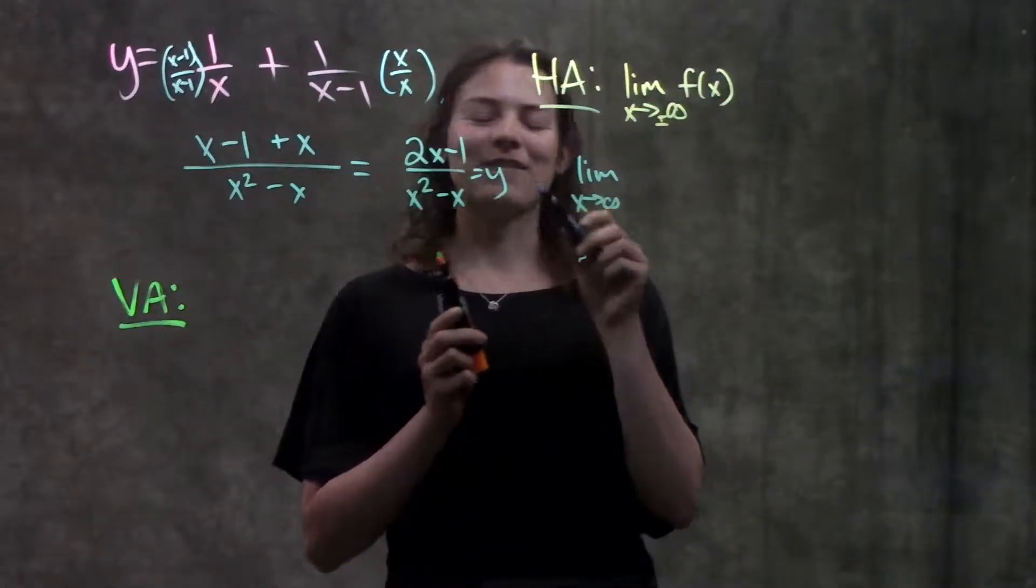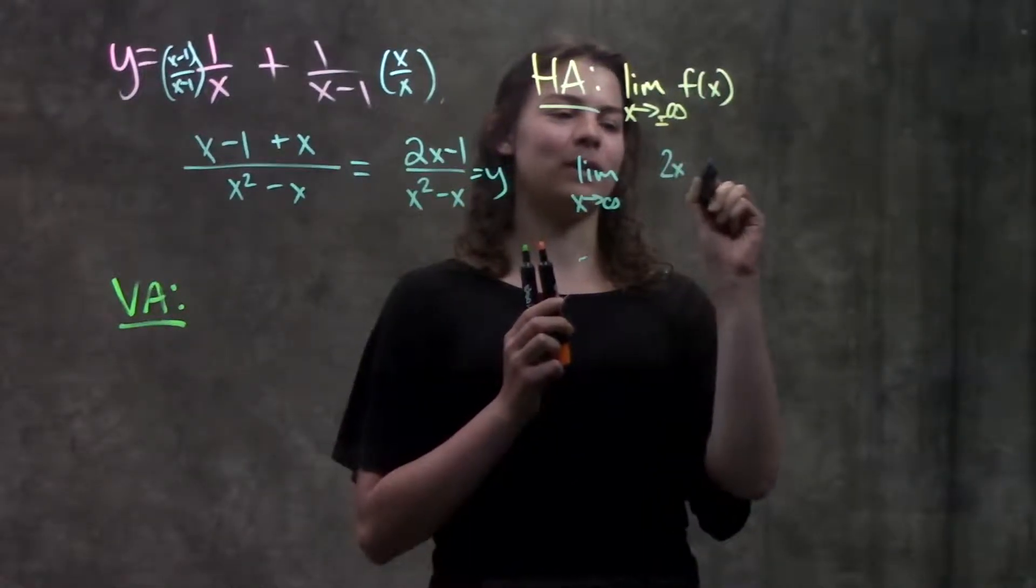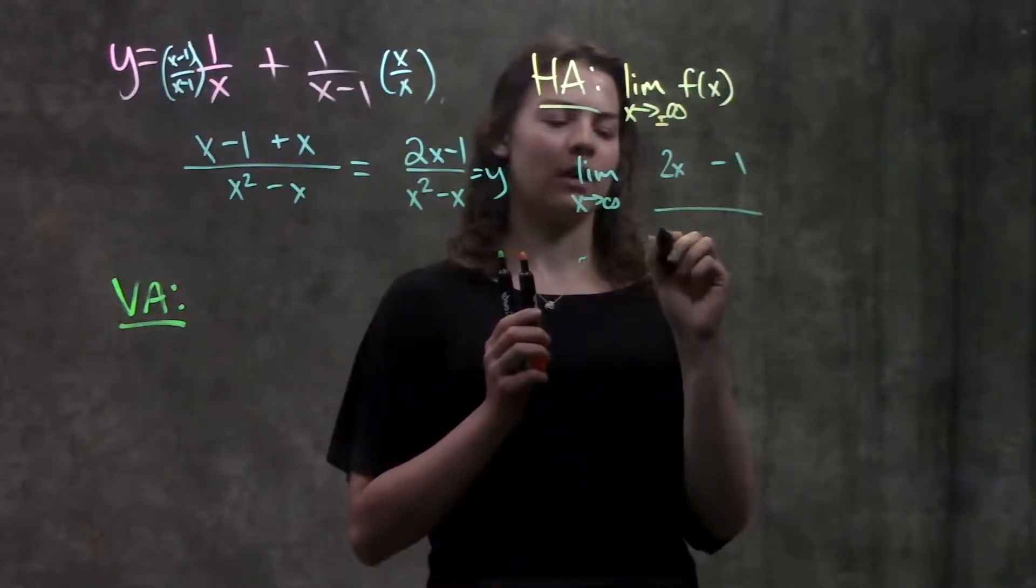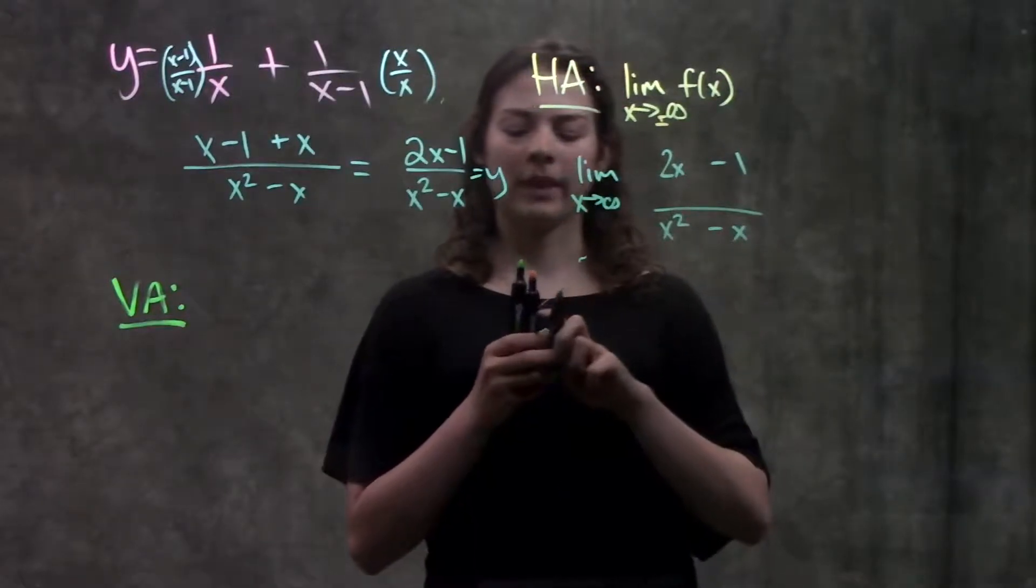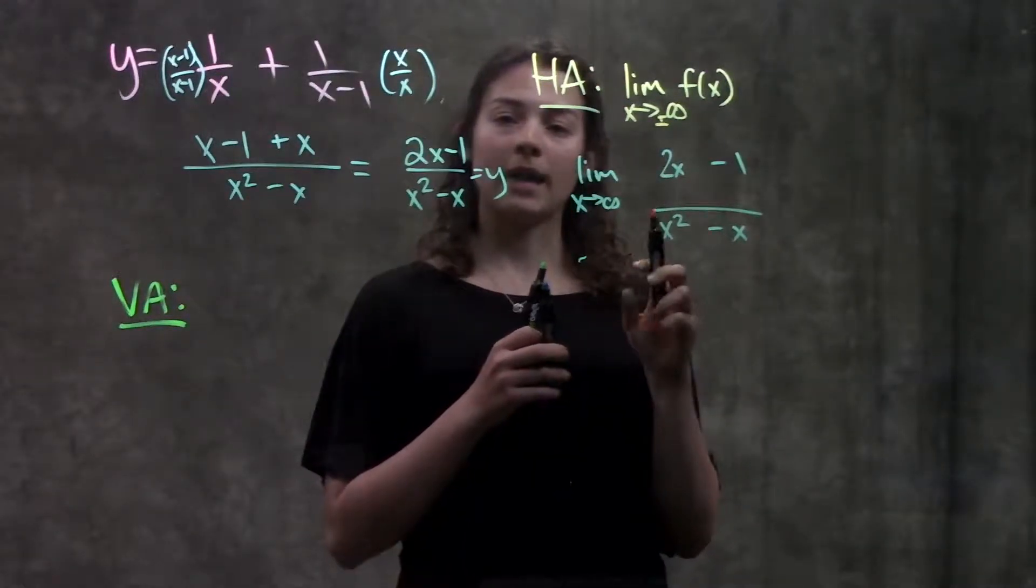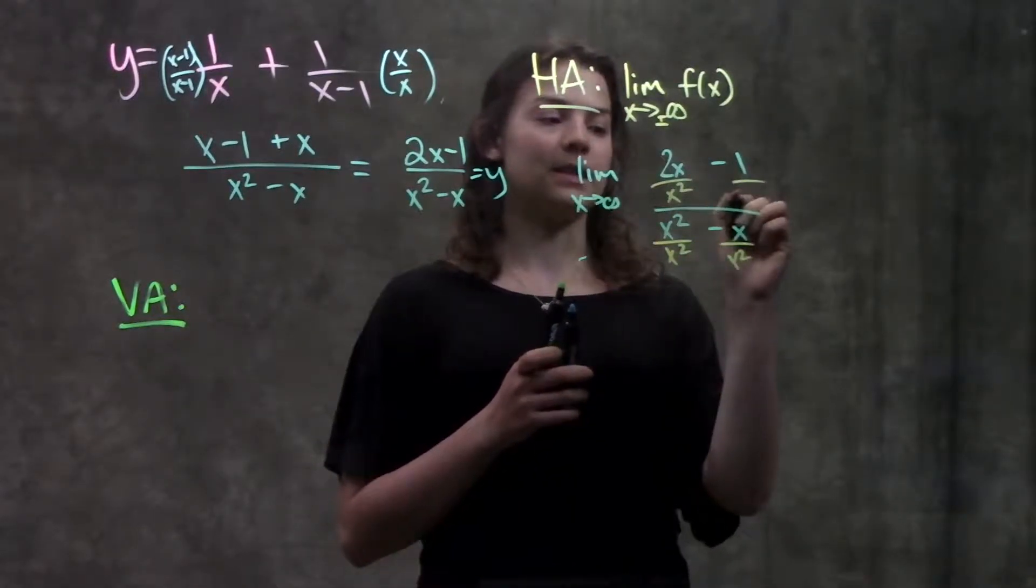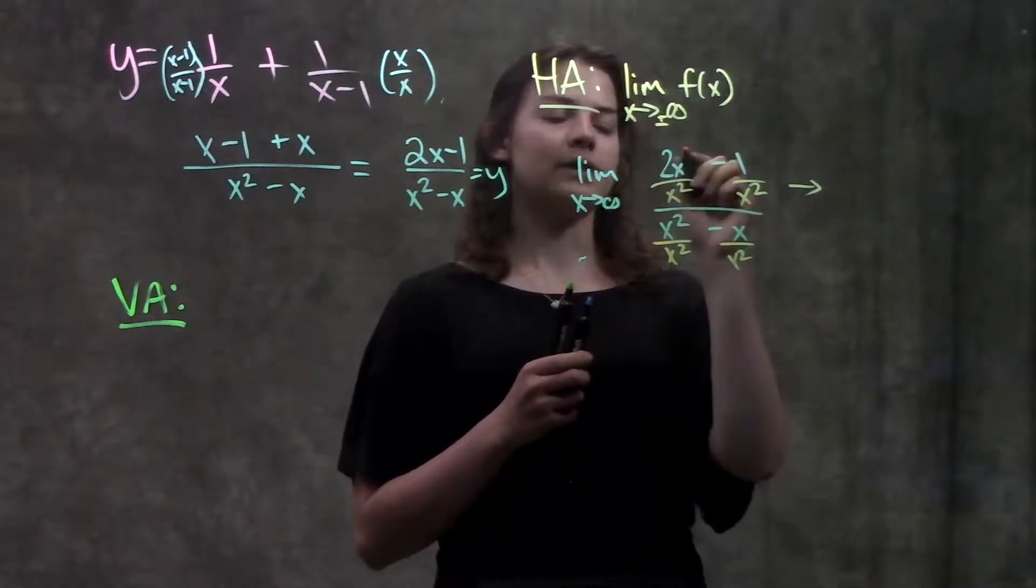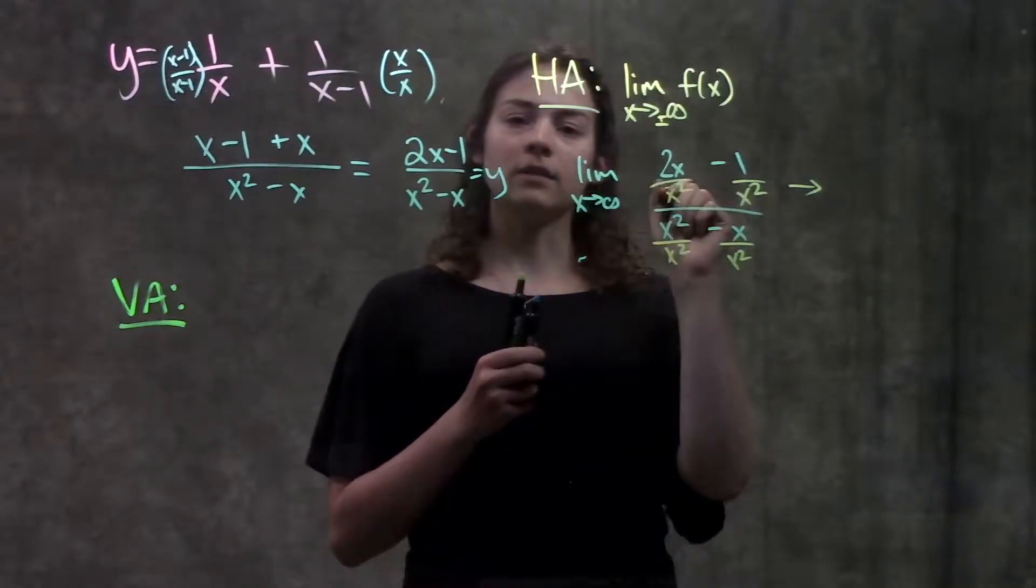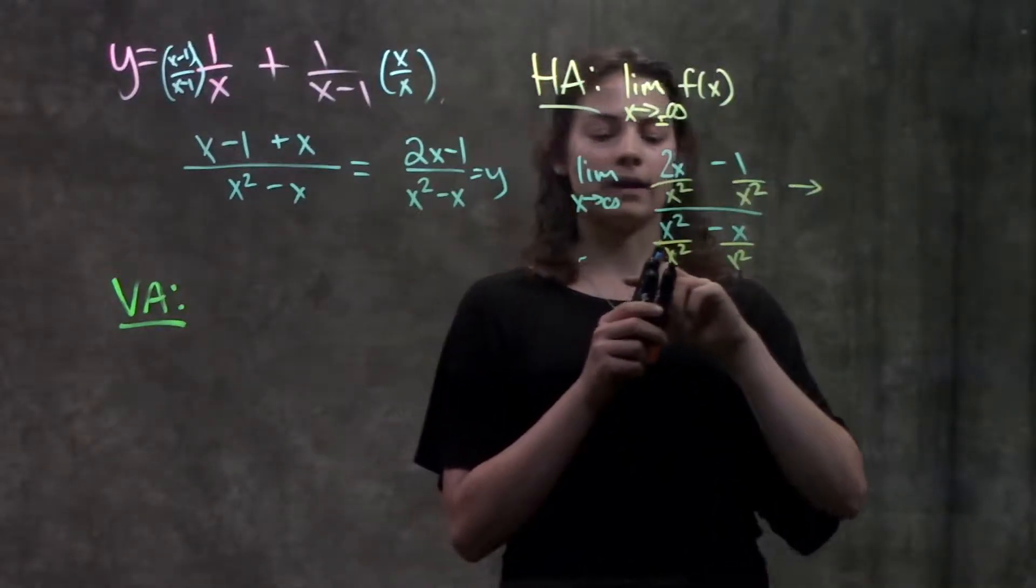Alright so we have our function 2x minus 1 over x squared minus x. I look in my denominator for the highest x power which is x squared and I divide every term by that power and see what I'm left over with. On the top here my x's are going to cancel and I'll end up with 2 over x.